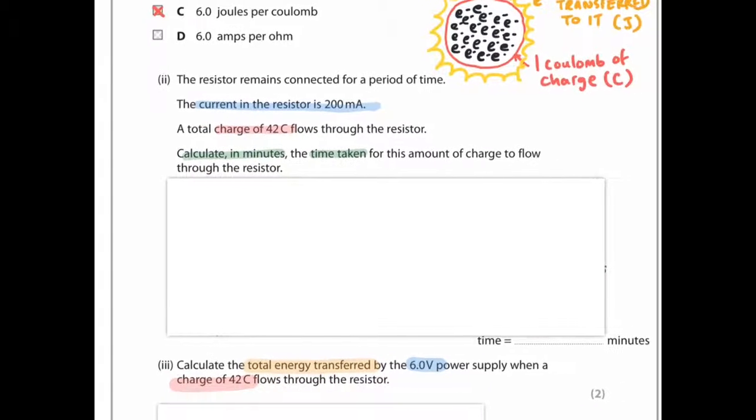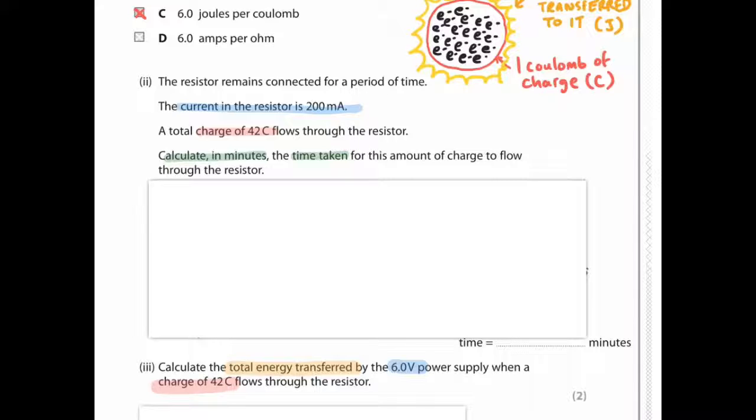The resistor remains connected for a period of time. The current in the resistor is 200 milliamps. A total charge of 42 coulombs flows through the resistor. Calculate in minutes the time taken for this amount of charge to flow through the resistor. We have current in milliamps. Be careful, that's not a standard unit. That will need to be converted to amps. We have charge, 42 coulombs, and calculate in minutes the time taken.